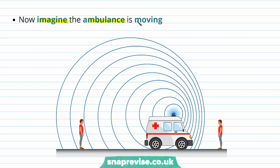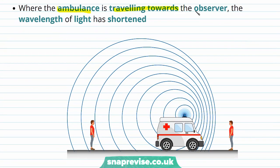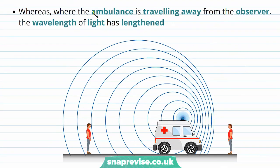Now imagine that the ambulance starts moving towards one of the observers with some velocity V. Where the ambulance is travelling towards the observer the wavelength of sound has shortened, and we can see that the wave fronts in front of the ambulance reaching that observer have got much shorter. Whereas where the ambulance is travelling away from the observer the wavelength of sound has lengthened — the wavelength between each wave front has increased.